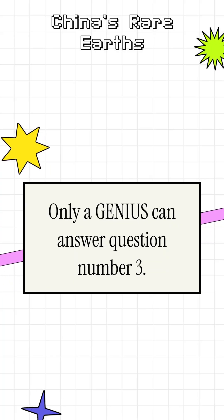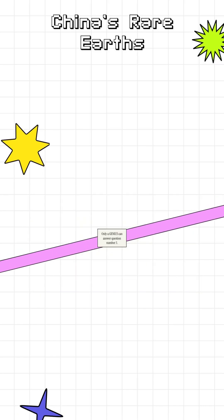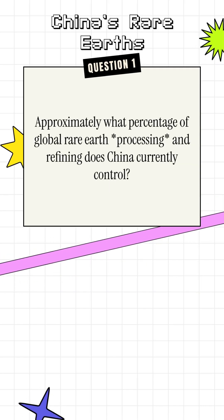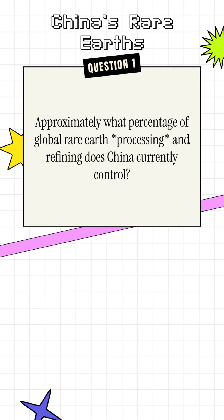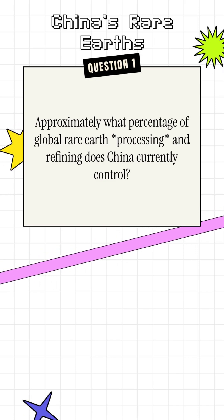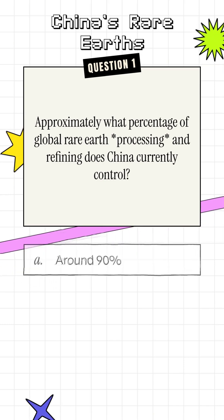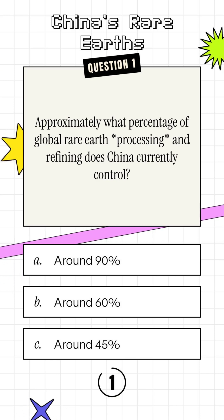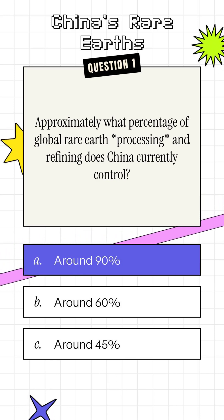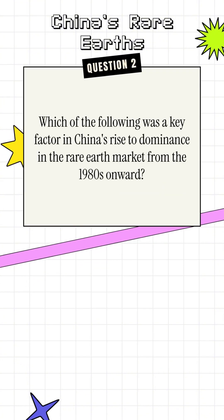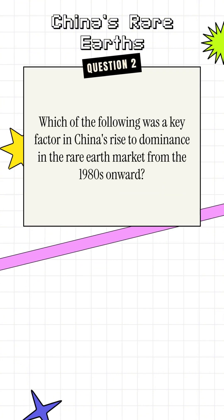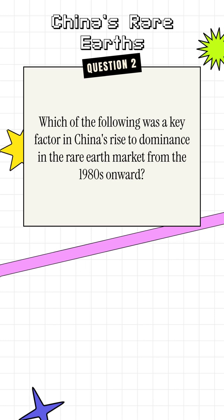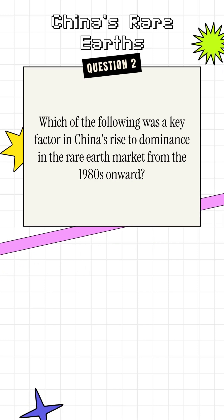Only a genius can answer question number three. Approximately what percentage of global rare earth processing and refining does China currently control? Which of the following was a key factor in China's rise to dominance in the rare earth market from the 1980s onward?